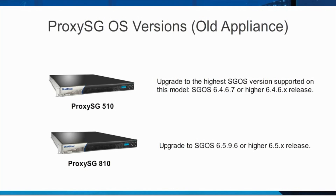Depending on which version your existing appliance is currently running, the upgrade path may require that you upgrade to an interim release on your existing appliance before migrating to a new appliance. For the ProxySG 510, upgrade to the highest SGOS version supported on this model, which is SGOS 6.4.6.7 or a higher 6.4.6.x release. For the ProxySG 810, upgrade to SGOS 6.5.9.6 or a higher 6.5.x release.